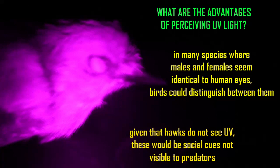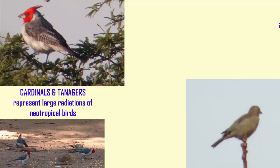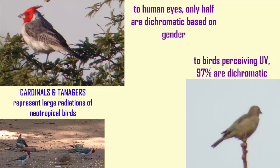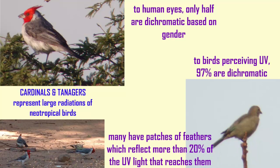Cardinals and tanagers are large radiations of neotropical birds which can perceive UV light. To human eyes, only half of them appear dichromatic based on gender, so humans can only distinguish between half of the species by male and female. But to birds perceiving UV, this number is 97%, and many of them have patches of feathers which reflect more than 20% of the UV light which reaches them.